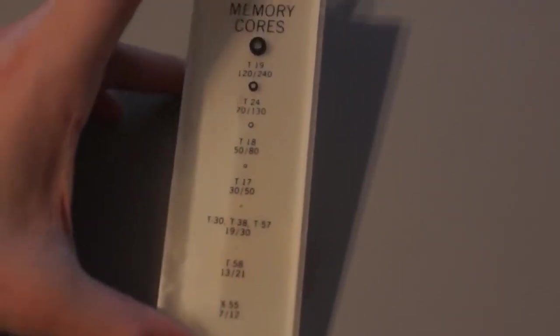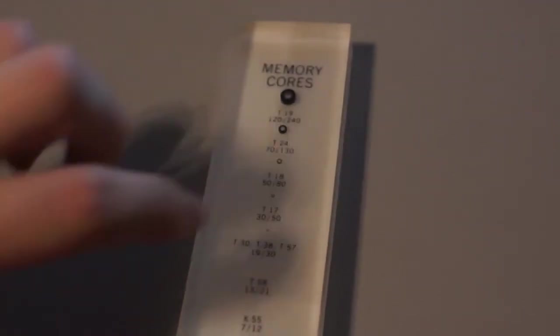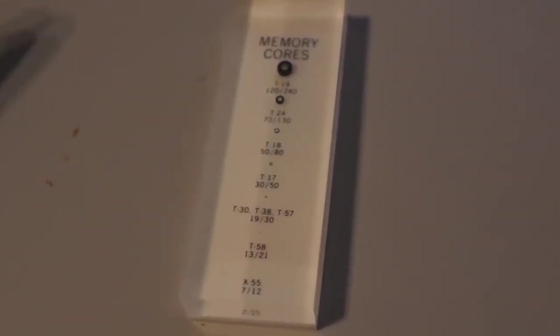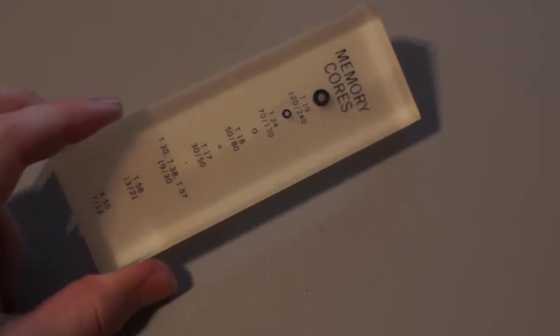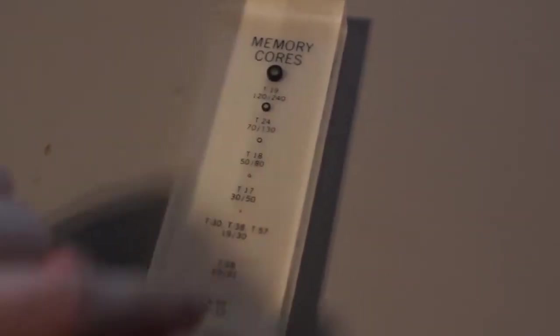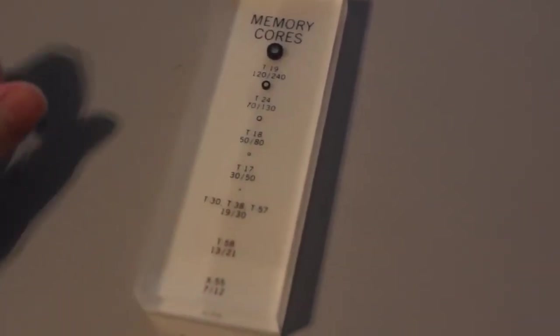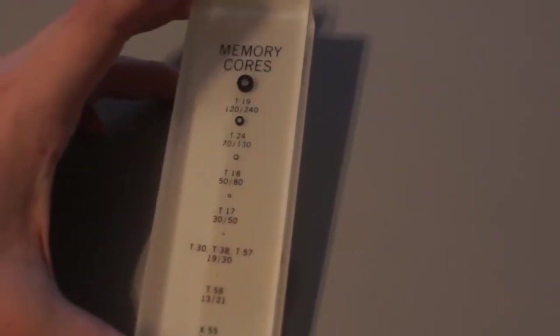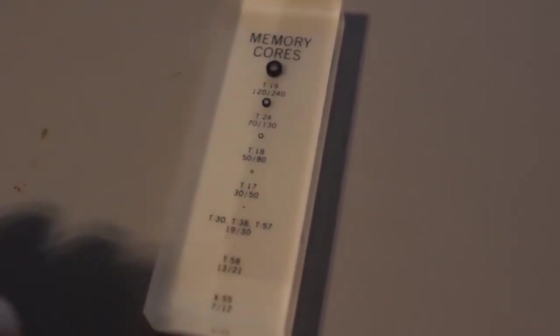These are core memory bits or little iron donuts that were used mostly in the 50s to 70s for memory on computers. They were sewn by hand and they would be in little grids. I'll show a picture here. And this little display here kind of shows the sizes over the years.